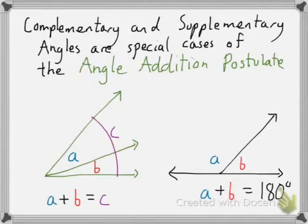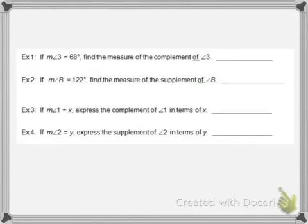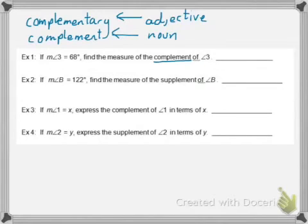Let's look at a few examples. So in example one, it's asking if measure of Angle 3 is 68 degrees, find the measure of the complement of Angle 3. Before we solve the problem, I want to point out that the word complement here is the noun version of Complementary. The word Complementary is an adjective that describes what kind of angles we are talking about. The complement is the other angle that makes it add up to 90 degrees. So in this case, we have an angle that measures 68 degrees.